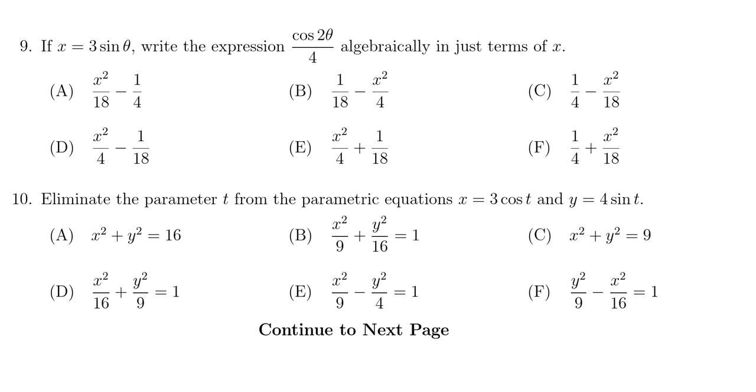In this video we provide the solution to question number nine for the practice final exam for math 1060, in which case using the substitution x equals three sine of theta we need to rewrite the expression cosine of two theta over four algebraically in terms of just the variable x.